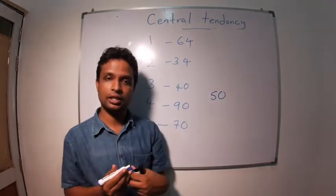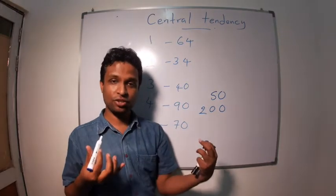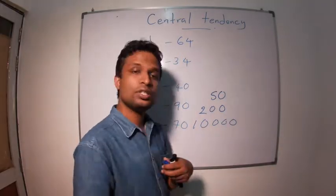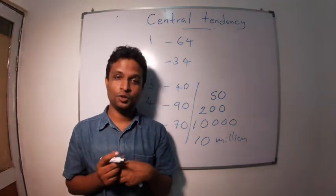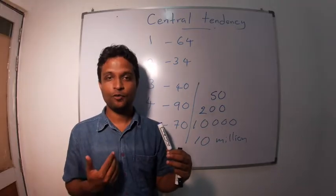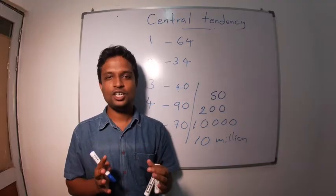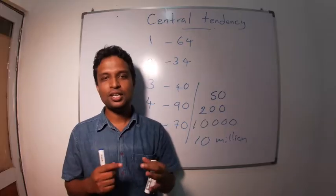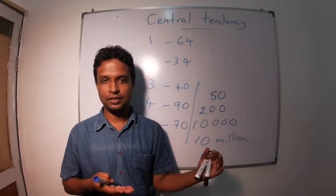But what will happen if there are 50 students in a class, or 200 students in a batch, or 10,000 students in your university, or 10 million students in your country? Can we list one by one from first to one million? It is difficult. Because of that, we need to summarize data.